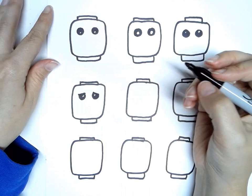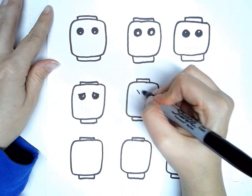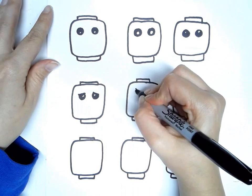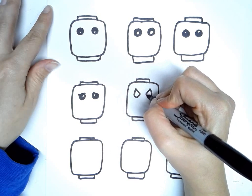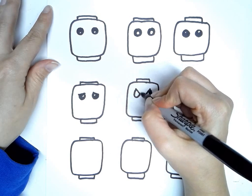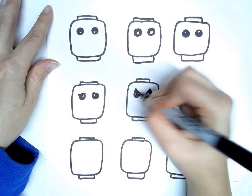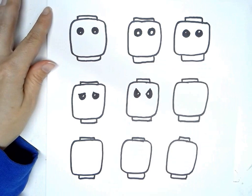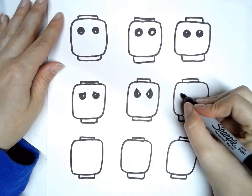Or maybe you're like, angry. And your eyes are going to be shaped more like that. You can decide. Sometimes they just have like, squinty eyes.